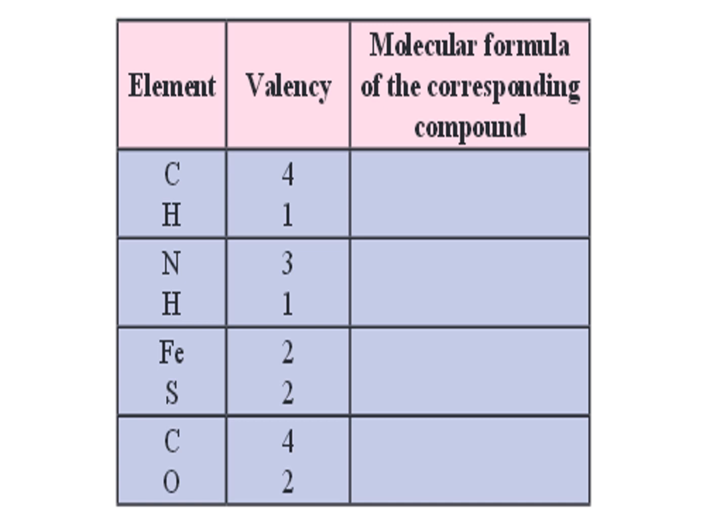This is a picture which has been taken from your textbooks only. The first element is what we are going to find out. We are going to find out what will be the molecular formula of the compound that is made up of carbon and hydrogen. Carbon's valency is given as 4 and hydrogen's valency is given as 1. We need to find out what will be the molecular formula.